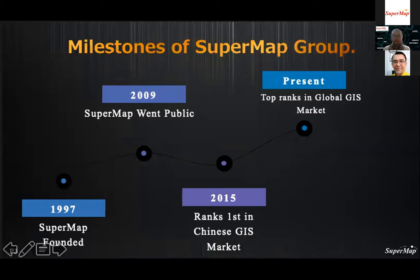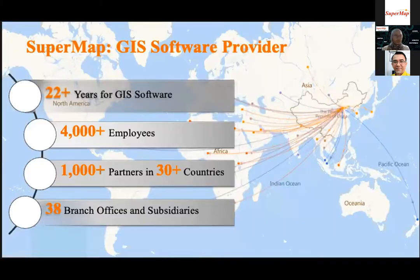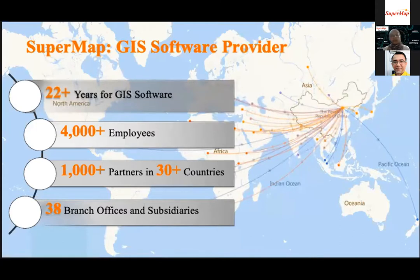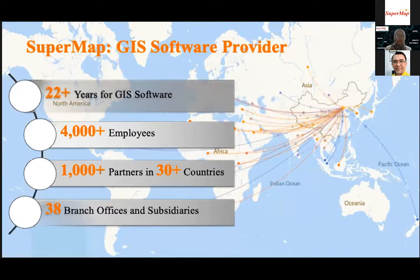In SuperMap, we focus on providing innovative GIS platform software and solutions for various industries such as smart cities, land management, real estate, urban planning, and so on. We have been involved in the development of GIS software for more than 22 years. SuperMap now has more than 4,000 employees with annual revenue growth of over 30%, and has successfully entered Asia, Europe, Africa, South America, and other regions, with partners from over 30 countries and end users from over 100 countries, establishing 38 branch offices worldwide.